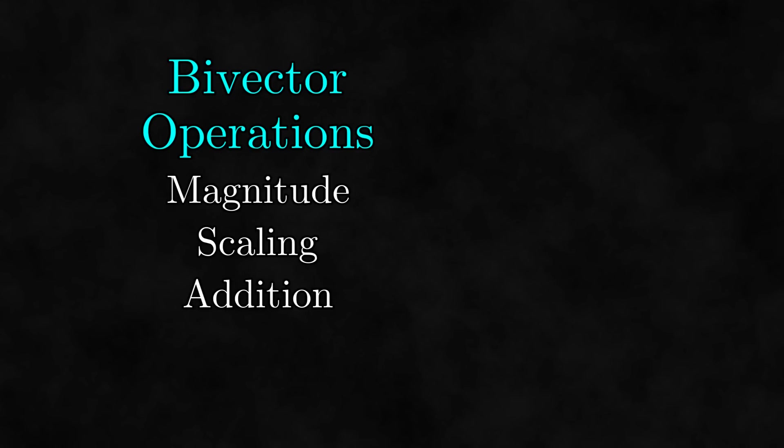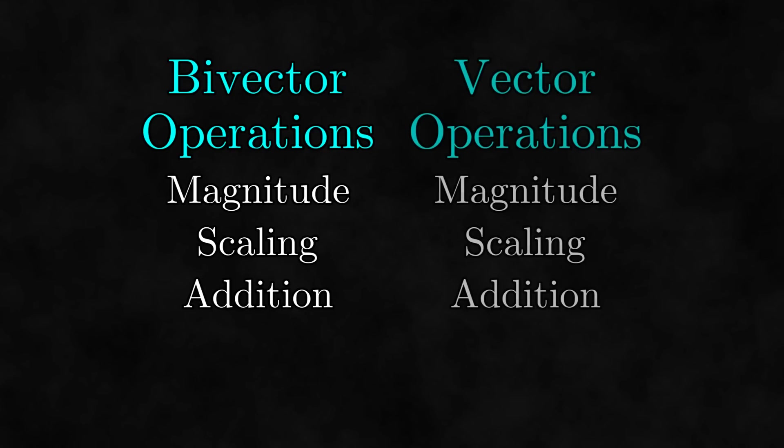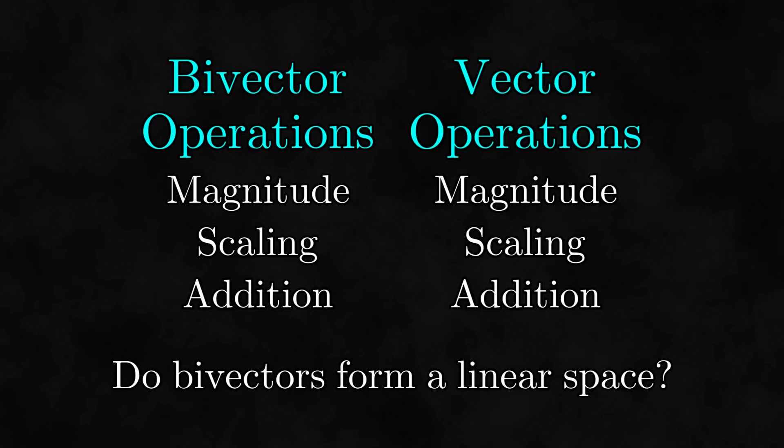However, these are the same operations that we have for vectors. We saw in a previous video that anything that acts like vectors in an algebraic sense is called a linear space. Does this mean that bivectors form a linear space? That is what we will look at in this video.